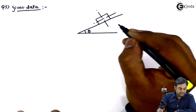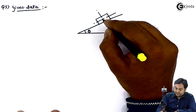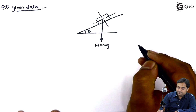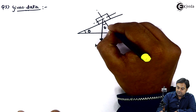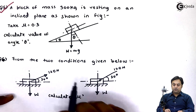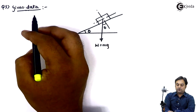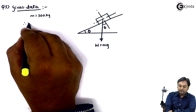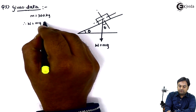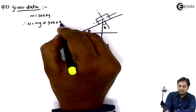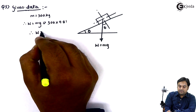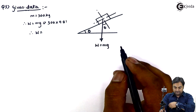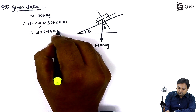This block is inclined at an angle of theta. Weight is acting vertically down, so W is equal to m into g. The mass of this block M is 300 kg. So the value of weight is equal to m into g, that is 300 into 9.81. Therefore W comes out to be 2.94 into 10 raised to 3 Newton.